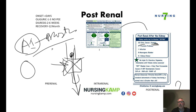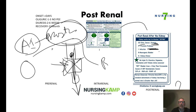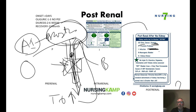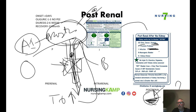Infections can also cause post-renal problems, as can neurogenic bladder and kidney stones. General rule: with post-renal failure, always perform a bladder scan first to assess for urinary retention. We want less than 100 cc's. If greater than 250-300 cc's, an intervention such as a Foley catheter is needed.